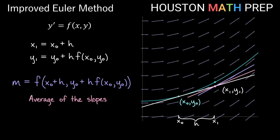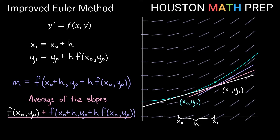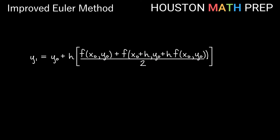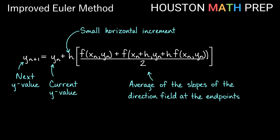To find the average of the two slopes, we take the slope on the left side of the interval, add the slope on the right side of the interval, and divide by two. You can see that if we take a line with slope equal to the average of those two slopes and put it through the initial condition, we get a much better approximation of the actual y value on the solution. So if we put this average of the slopes in for the slope in the original Euler's method formula, we get an equation for y1. In general, the next y term equals the current y value plus h times the average of the slopes of the direction field at those two endpoints — that gives us the improved Euler's method formula.